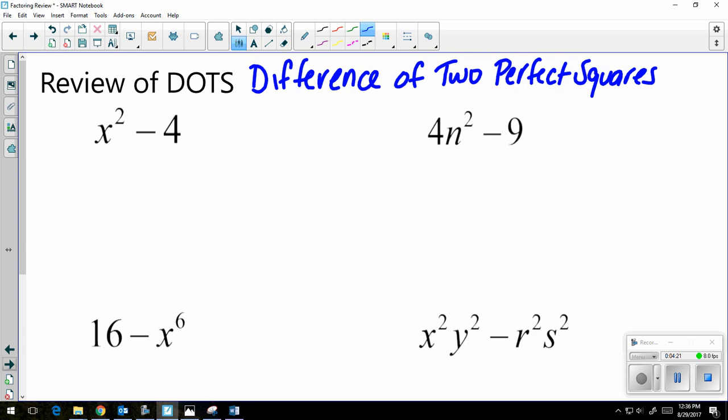And I have to have a perfect square. So it might be helpful for you to list out your perfect squares. If you don't know them, use your calculator. 1 squared is 1. 2 squared is 4. 3 squared is 9. 4 squared is 16. 5 squared is 25. 6 squared is 36. 7 squared is 49. And you can continue from there.